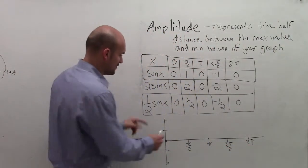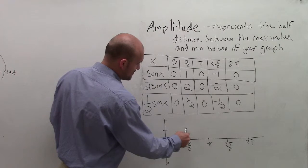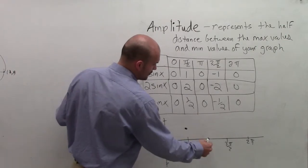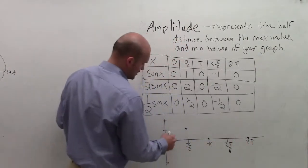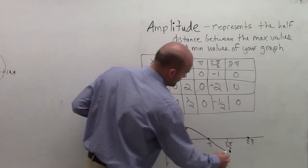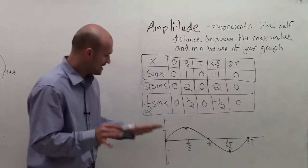Now, graphing the original sine function, I know the highest it goes up is the maximum is at 1, then it crosses at 0, goes down to negative 1, and goes back up to 0. So it looks something like this, right? That's my sine graph.